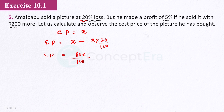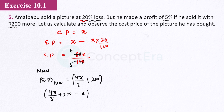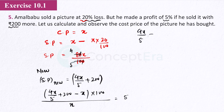In the second case, if the selling price is 200 more: new selling price is 4x/5 plus 200. If sold at this price, the profit is 5%. So: (new selling price minus cost price) into 100 divided by cost price equals 5. Substituting: (4x/5 plus 200 minus x) into 100 equals 5x. This simplifies to 4x/5 plus 200 minus x equals 5x/100.